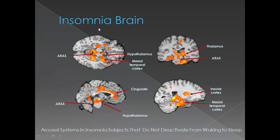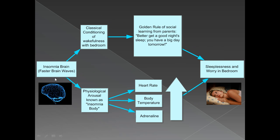There is a condition called insomnia brain — your insomnia brain is overactive or 'hot,' and it does not allow you to go to sleep. The arousal systems in insomnia subjects do not deactivate from waking to sleep. Your insomnia brain has very fast brain waves, and that leads to a classical conditioning of wakefulness with the bedroom. The belief that you must get a good night's sleep before a big day leads to sleeplessness and worry in the bedroom, thinking 'I am inadequate, I am not able to sleep.'